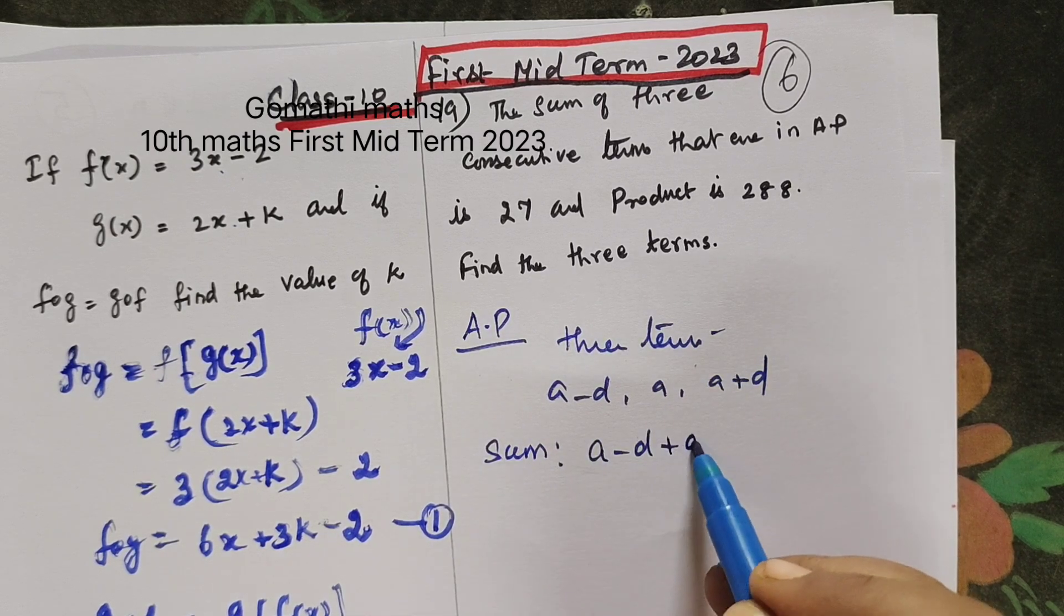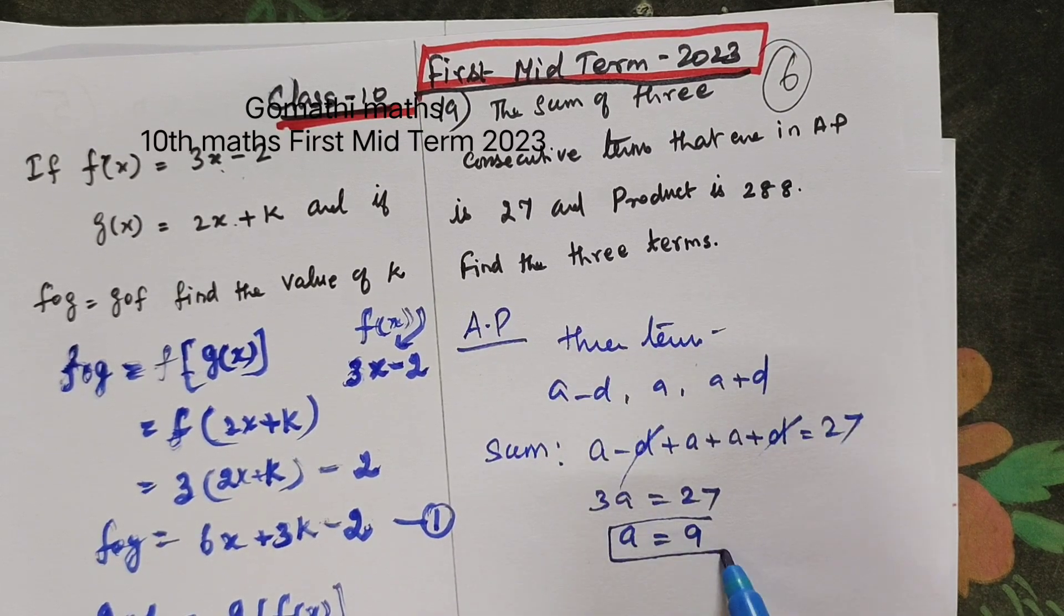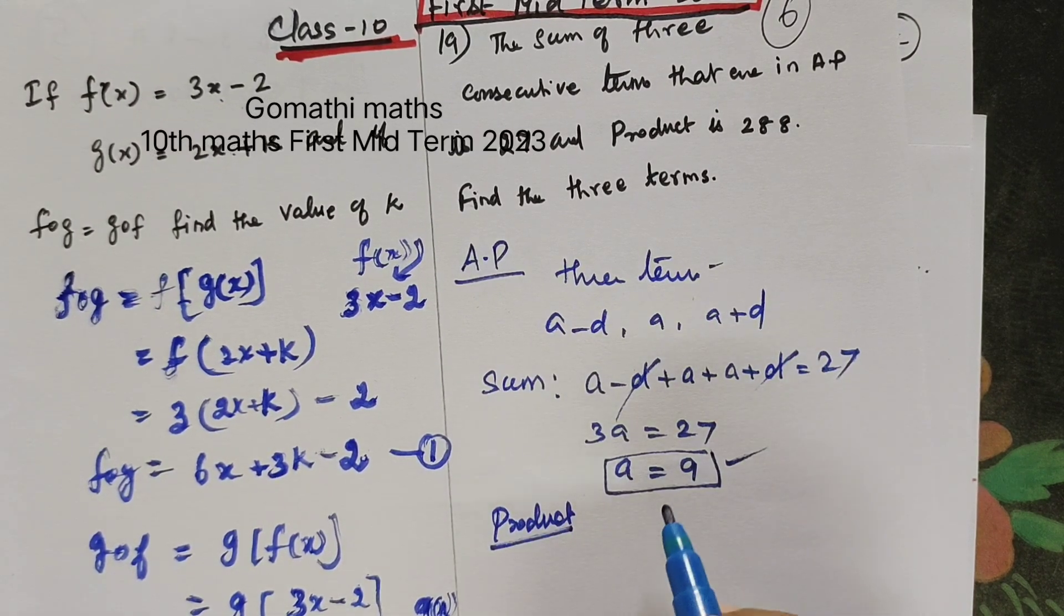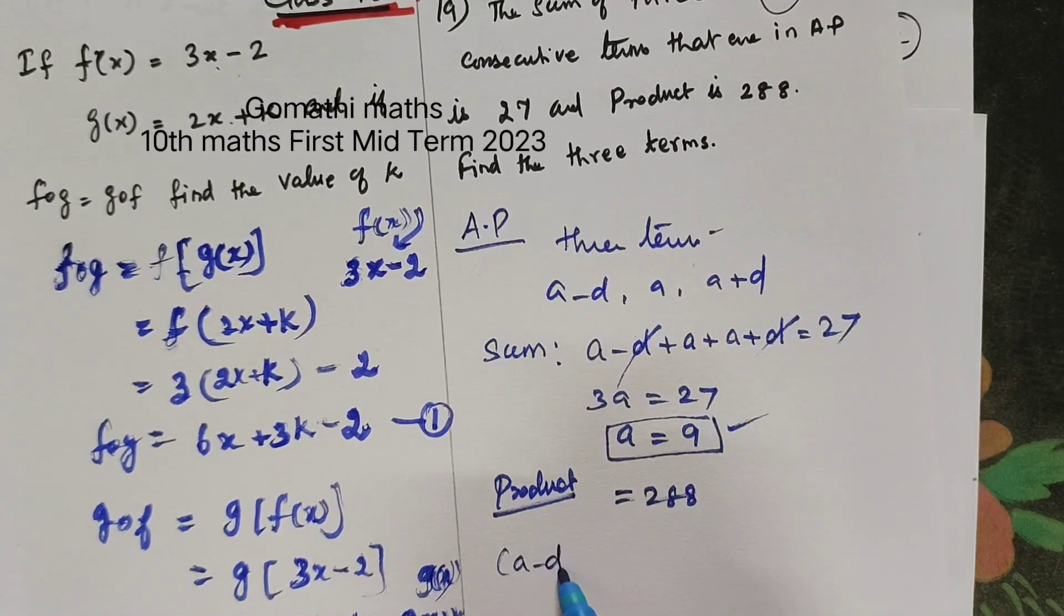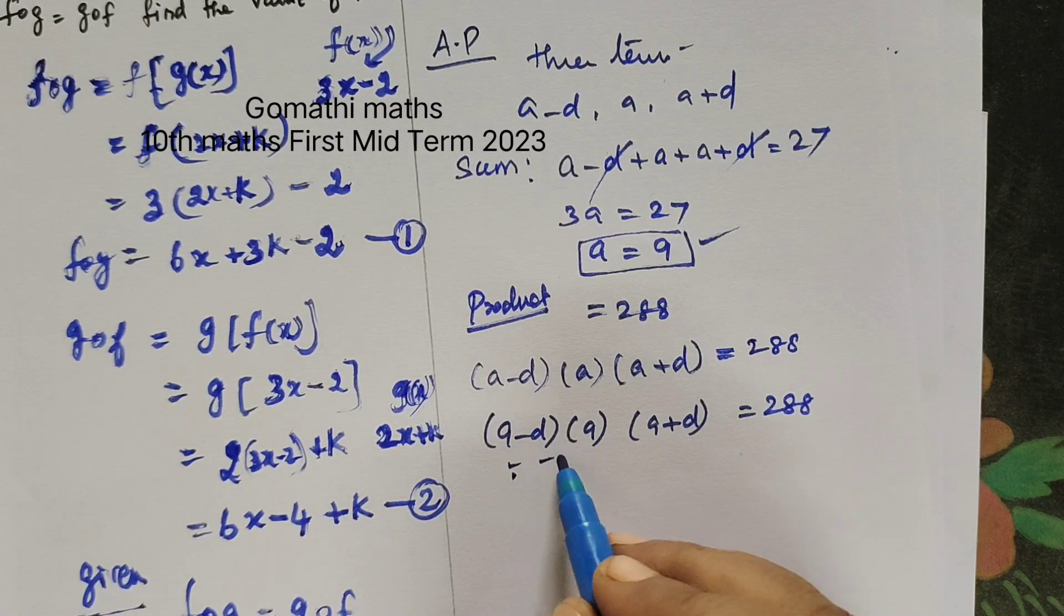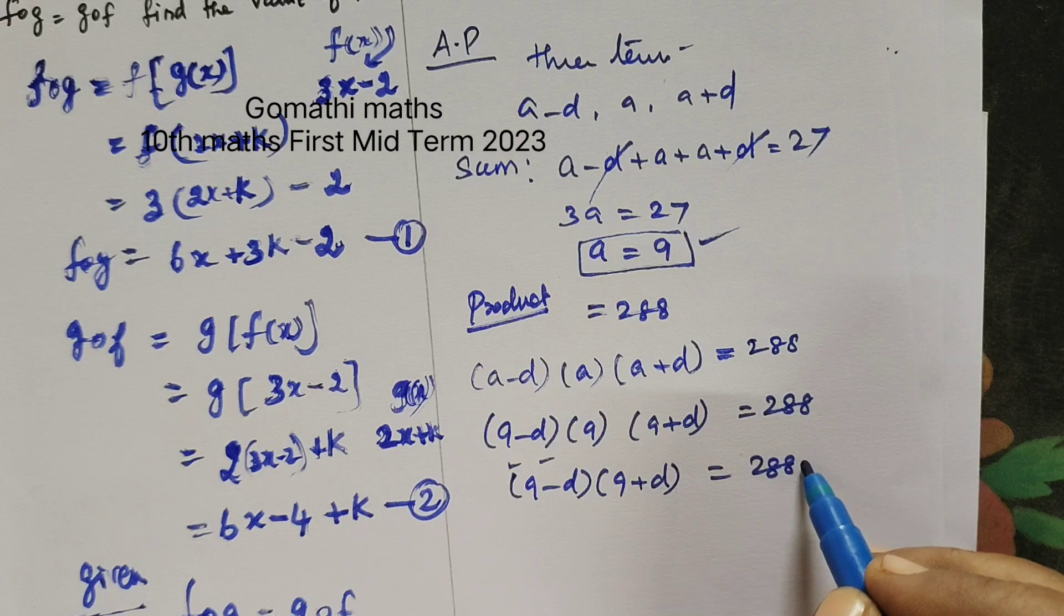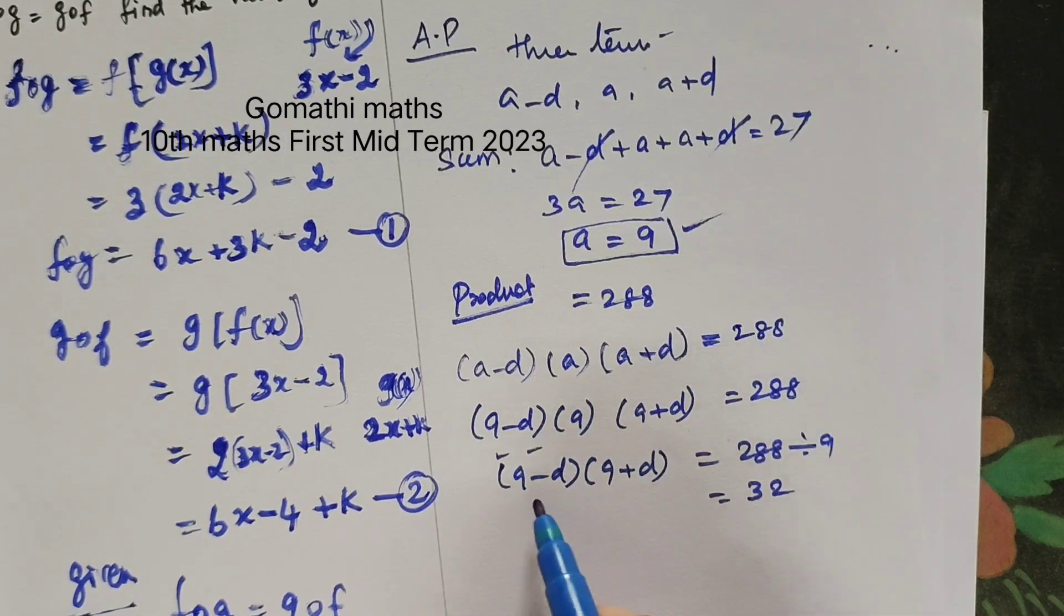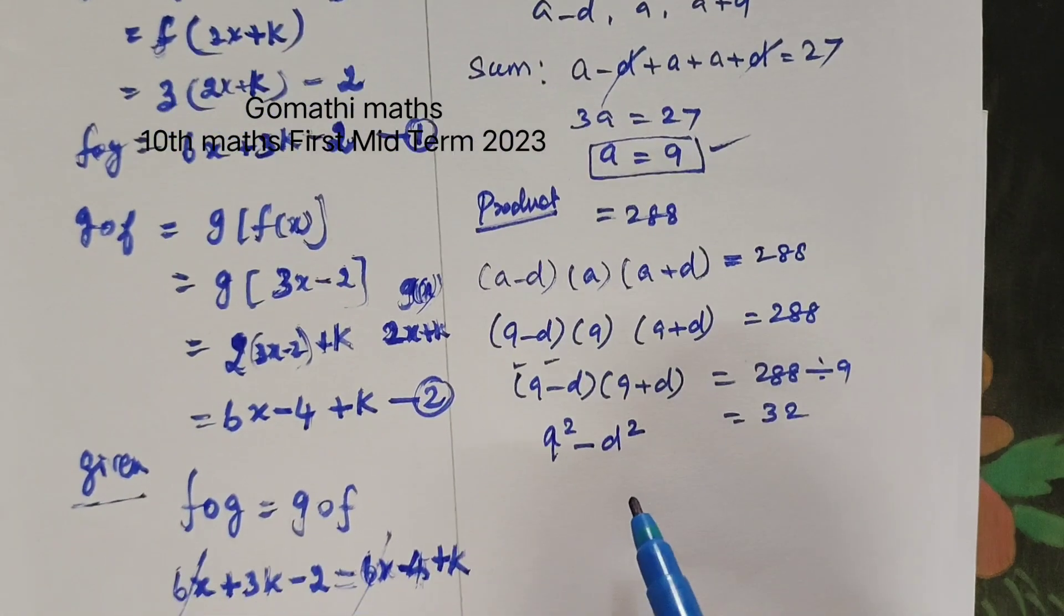Sum of 3 terms add, what is given 27. So a equals 9. Now product, product 288, equal to 288. Multiply a, divide by 9, this is a minus b into a plus b. Equal to 288 divide 9 gives 32. This is of the form a squared minus b square, so 9 squared minus d square. 81 minus d square equals 32. 49 equal to d square.